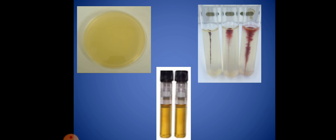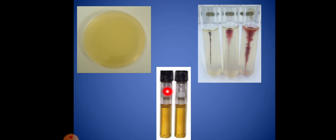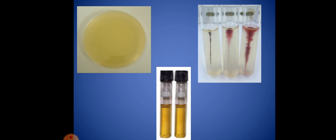Semi-solid medium contains 0.5% agar. Example: motility media. So the types of media are: solid media (example: nutrient agar), liquid media (example: nutrient broth), and semi-solid medium.